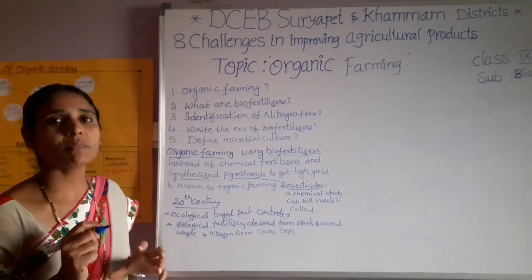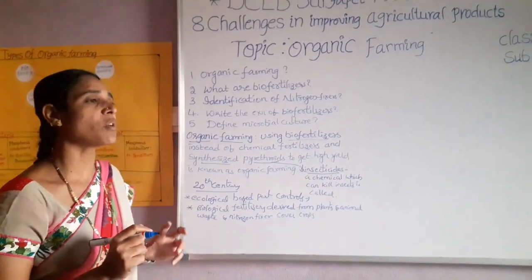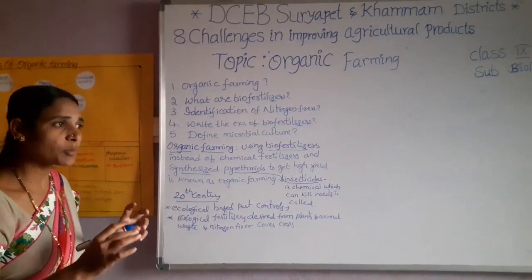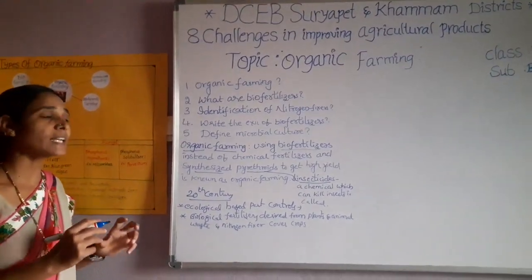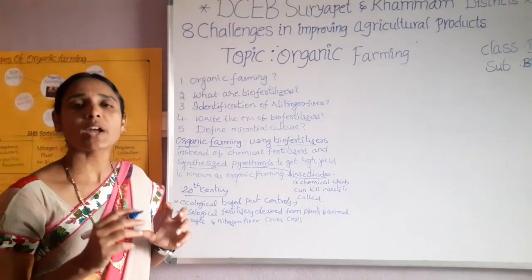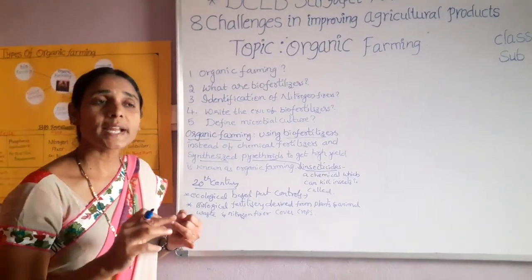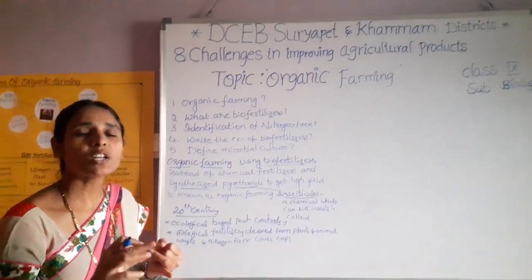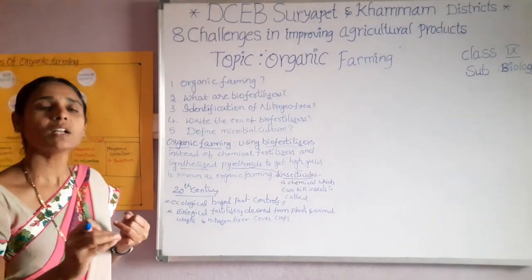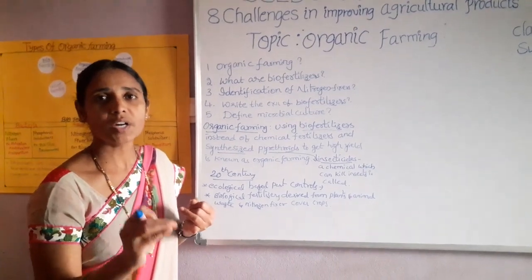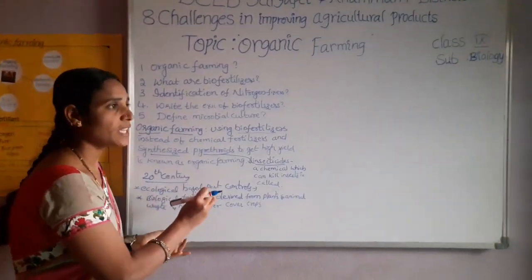For long-term high yield productivity, we need availability of good soil fertility — the physical, chemical, and biological nutrient factors in the soil. These can give the best soil fertility to our crops. These are the uses of organic farming culture — soil productivity helps to grow the best crops with high yield capacity.